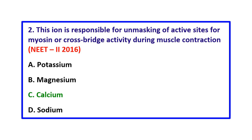Question 2: This ion is responsible for unmasking of active sites for myosin or cross bridge activity during muscle contraction — the correct answer is calcium.